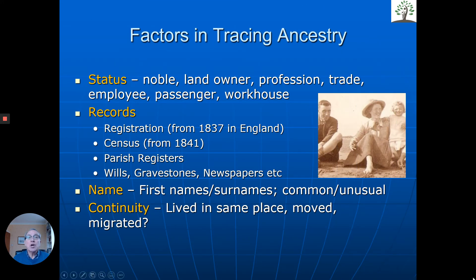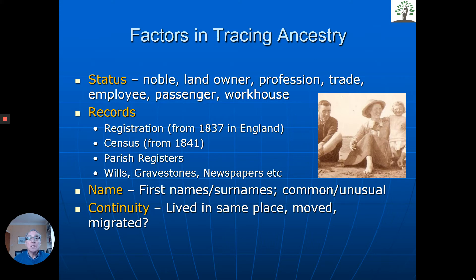What's involved in tracing ancestry? What are the chances of finding your ancestors? There are really three key things: did your ancestors do something that caused them to be recorded; has that record survived; and can we find it? There are four big factors that affect this. First, status — nobility and royalty had their records kept much more readily than someone from a rural background. Then landowners had their land recorded, often for tax reasons. Different professions and trades, employees of organisations — their records were kept. And even the poor, even those living in a workhouse, had good records kept.